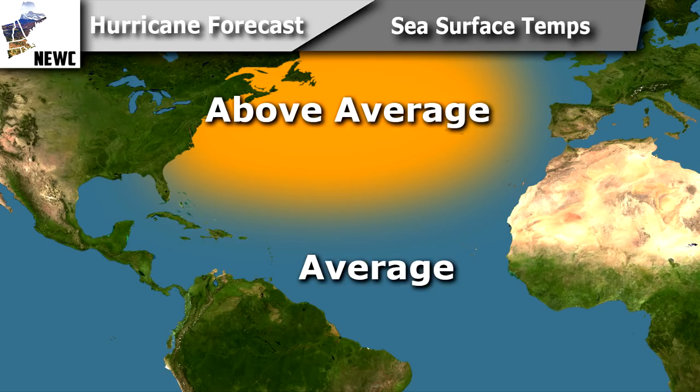The next thing we're going to look at is my sea surface temperatures forecast, and this is really what all the models are showing. It's also what the current sea surface temperatures are, so it's not really going to change much. Above average for the North Atlantic and roughly average for the tropical regions where development will happen, so not really going to get a lot of influence there — very average.